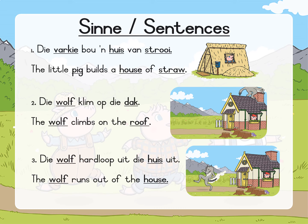Kom ons kyk na nommer 2. Die wolf klim op die dak. The wolf climbs on the roof. What can I see and touch? Wat kan ek sien en voel? Wolf en dak. Wolf and roof. Let's look at nommer 3. Die wolf hardloop uit die huis uit. The wolf runs out of the house. Wolf en huis. Wolf and house.